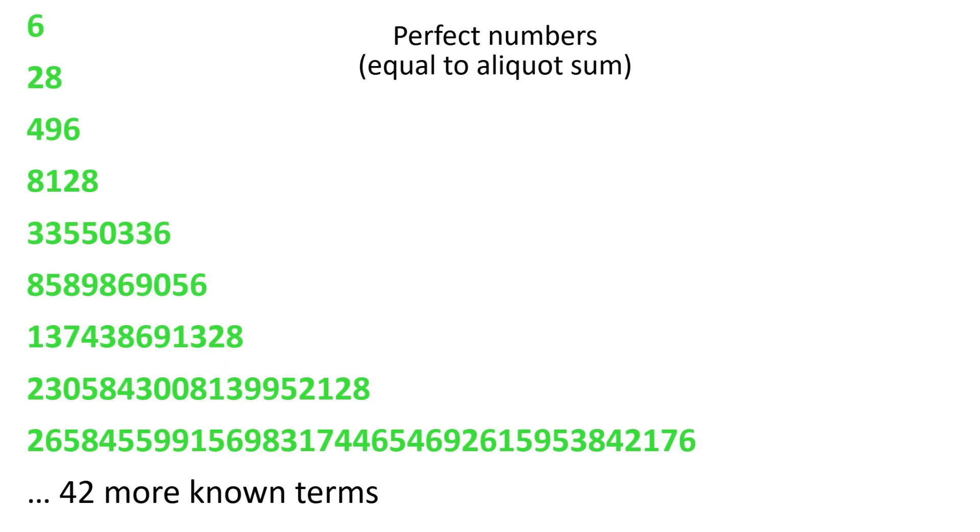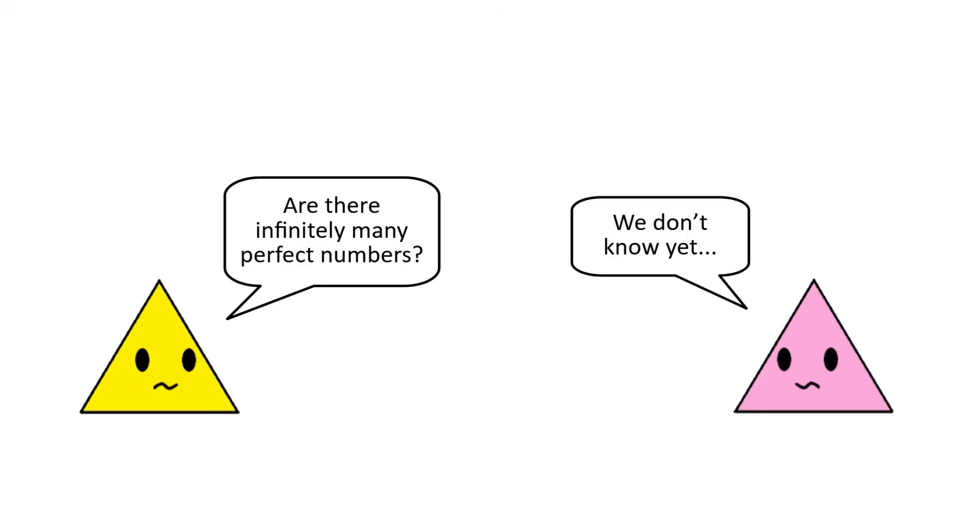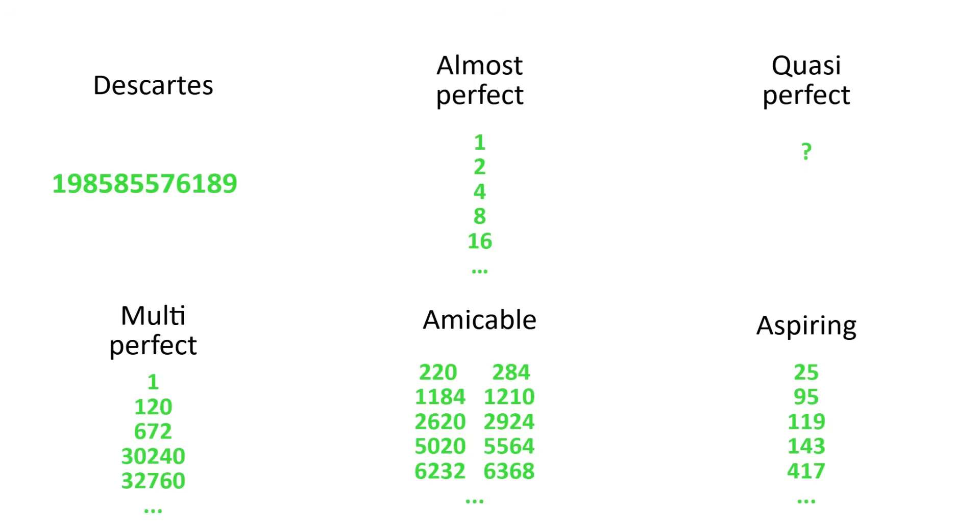There are 51 known perfect numbers, and they're all even. It remains unproven whether there are infinitely many perfect numbers, or whether there exist any odd perfect numbers. And it's not for lack of trying. Mathematicians have wondered these questions for thousands of years. This desire to strive for perfection has led to the discovery of many sets of almost perfect numbers, which will probably get their own video. But for now, we'll focus on how the quest for perfection affects how we use the aliquot sum.